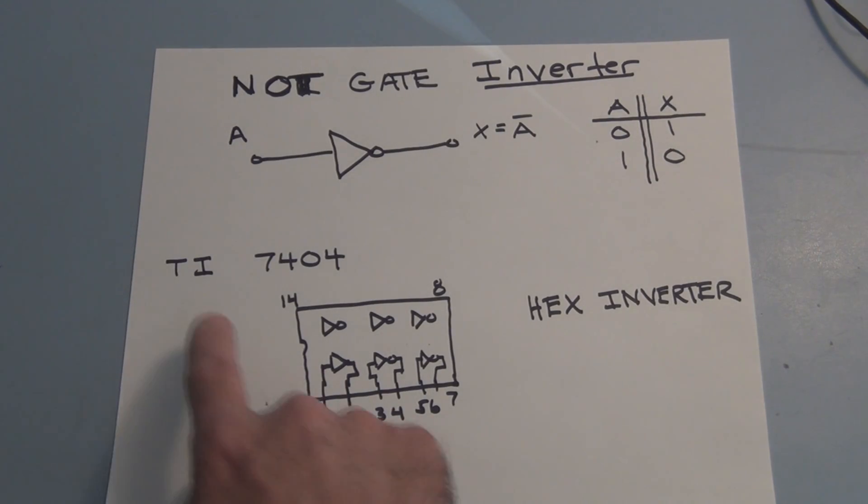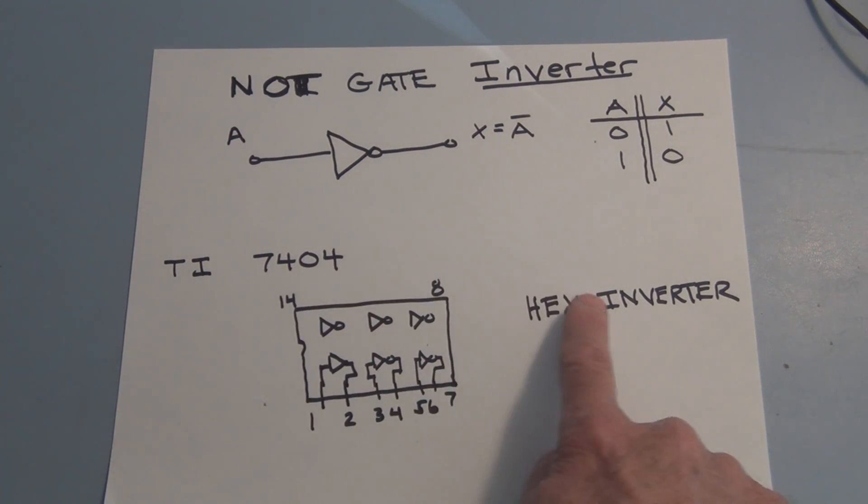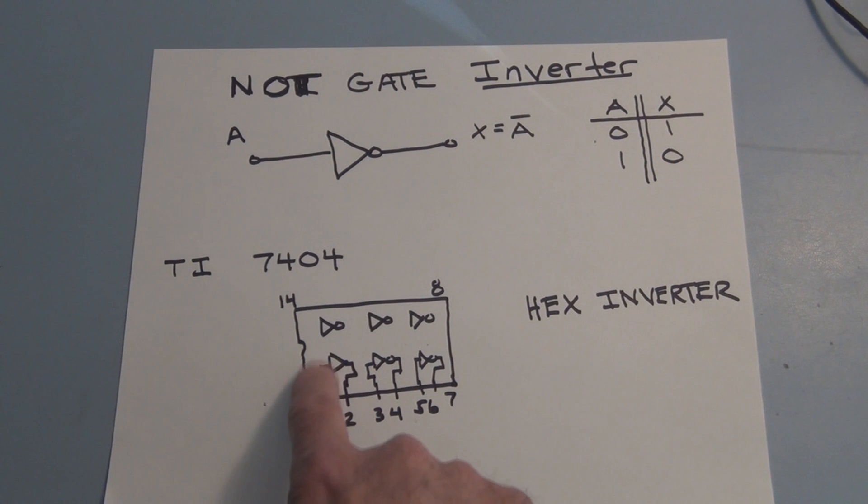In this case, I will be using the TI 7404. It is a hex inverter. There are six inverters on this IC package. So let's take a look at this logic device on the Heathkit experimenter.